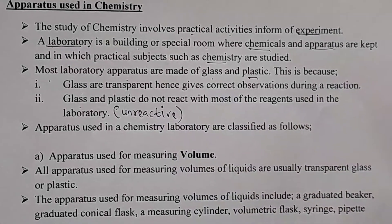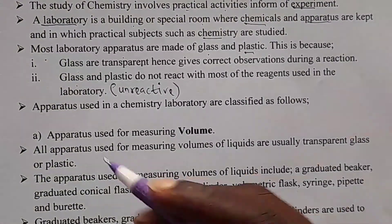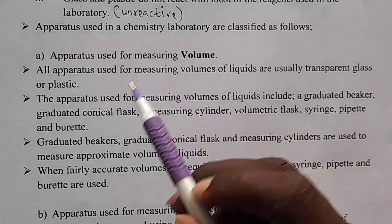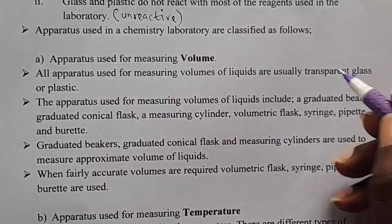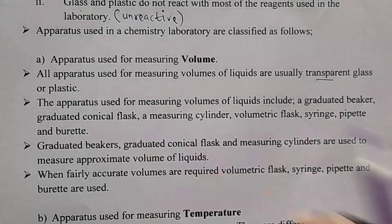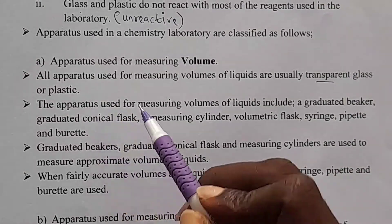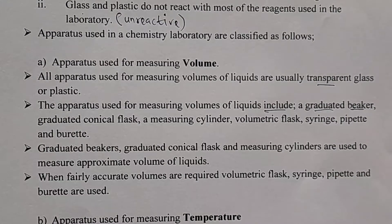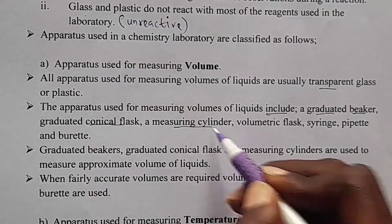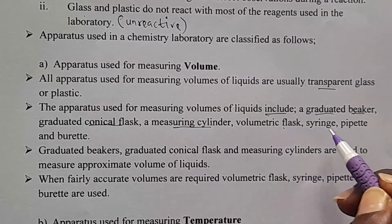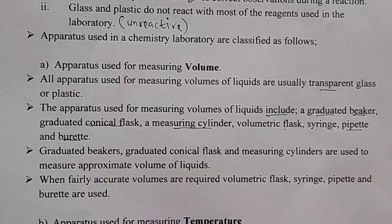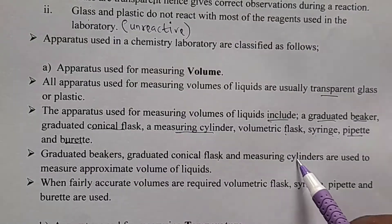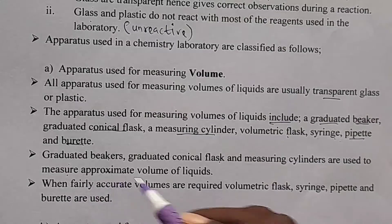Apparatus used in a chemistry laboratory are classified as follows. The first category is apparatus used for measuring volumes. All apparatus used for measuring volumes of liquids are usually transparent glass or plastic. These include: graduated beaker, graduated conical flask, measuring cylinder, volumetric flask, syringe, pipette, and burette. Graduated beakers, graduated conical flasks, and measuring cylinders are used to measure approximate volumes of liquid.